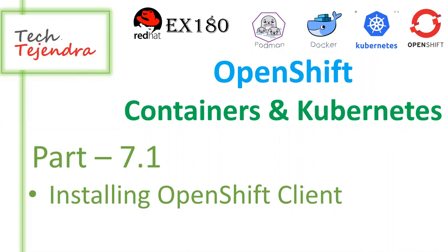As you know, we have provisioned one AWS Linux RedHat machine for this tutorial purpose, on which we have also installed Docker and Podman. We will use that same machine to install our OpenShift client, and that is the Linux machine.